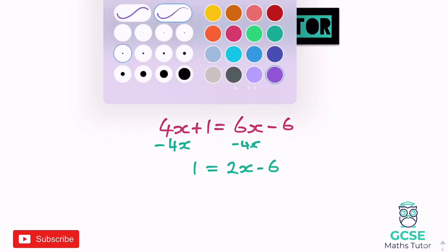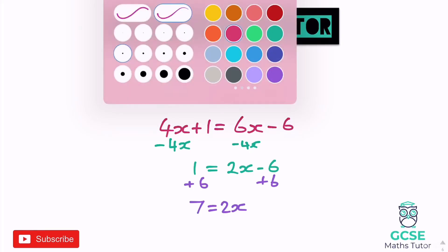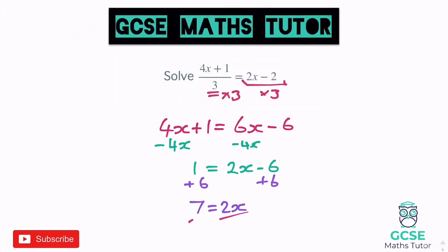Then we can get the numbers on one side — leave the 2x where it is, add 6 to both sides, and we get 7 equals 2x. Then finish that off just like normal: divide by 2, and that leaves us with x equals 7 over 2, which you can write as 3.5 if you want, but that's fine to leave your answer as a fraction. So 7 over 2 is our final answer.